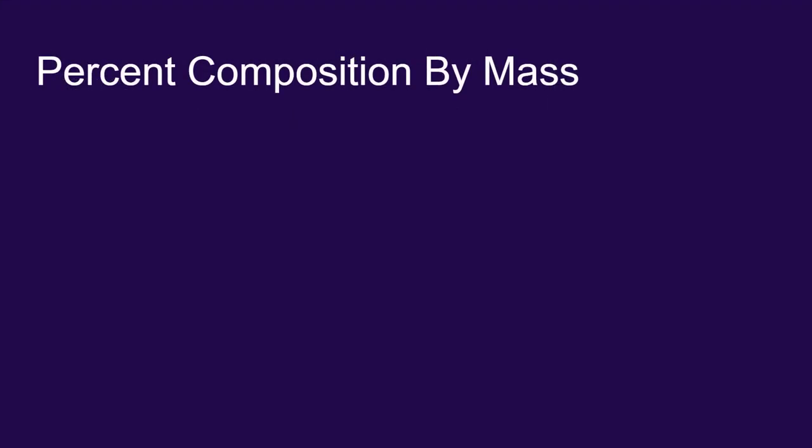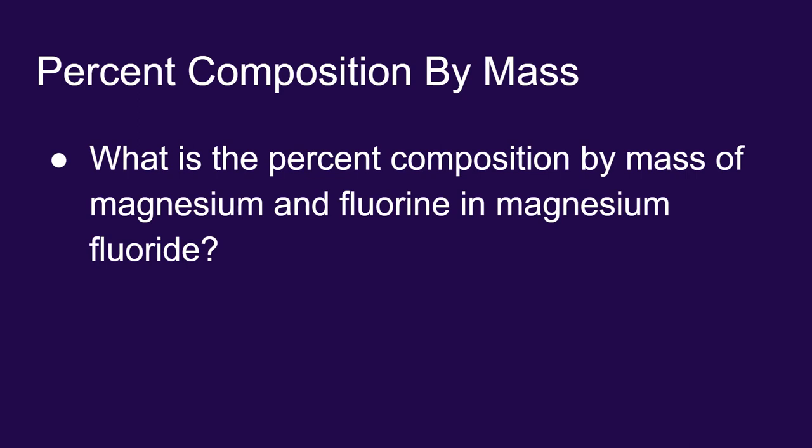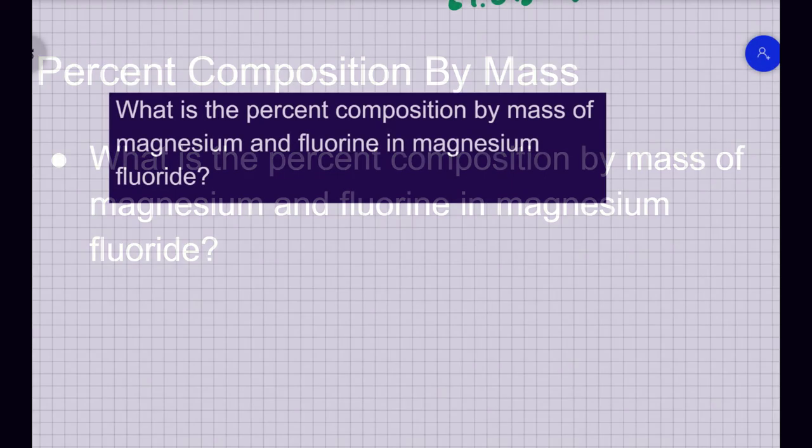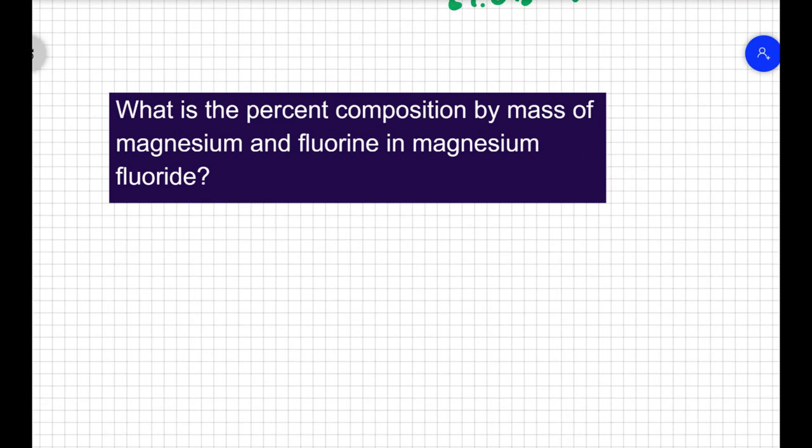Let's do the same process, but without all the data. Let's find the percent composition by mass of magnesium and fluorine again, but this time in the compound magnesium fluoride. We know that magnesium fluoride is an ionic compound, and magnesium as an ion forms a plus 2 charge. Fluorine forms a minus 1 charge. So magnesium fluoride is MgF2.